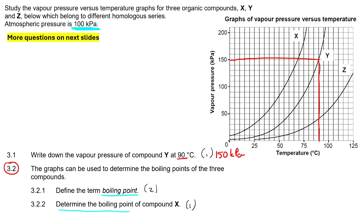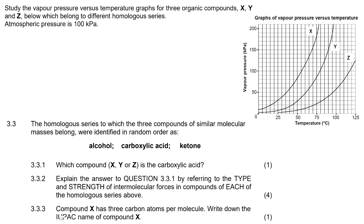Now it says determine the boiling point of compound X. If you look at X — it's this line — boiling point is when its vapor pressure equals atmospheric pressure, which is 100. So we go to 100 on the vapor pressure axis, find X's line, and drop down. That would be 55 degrees Celsius.